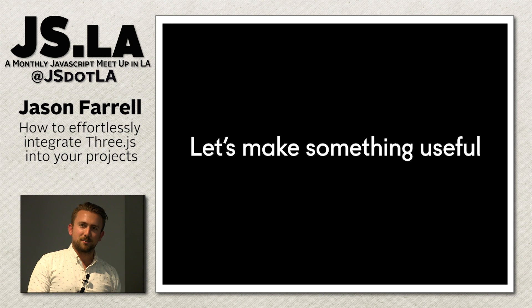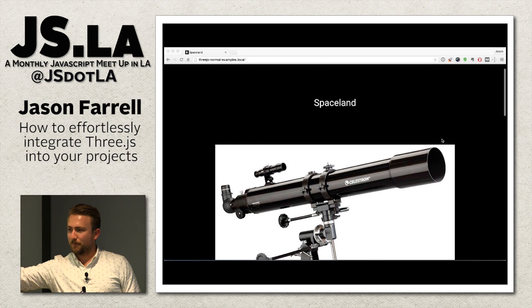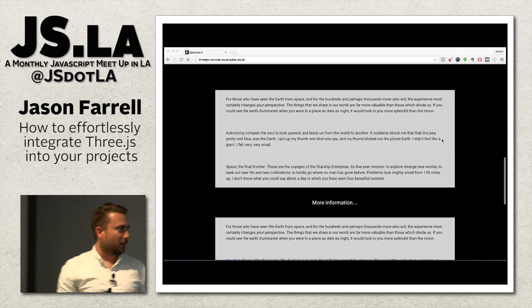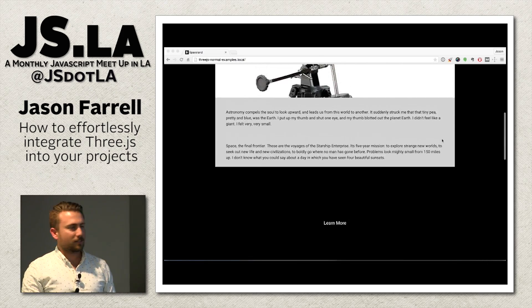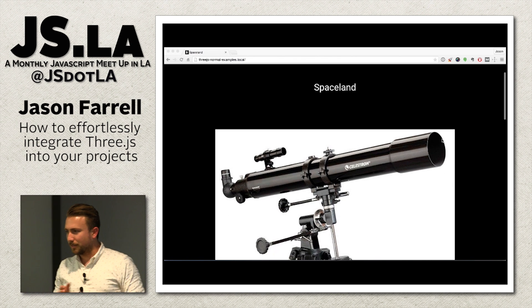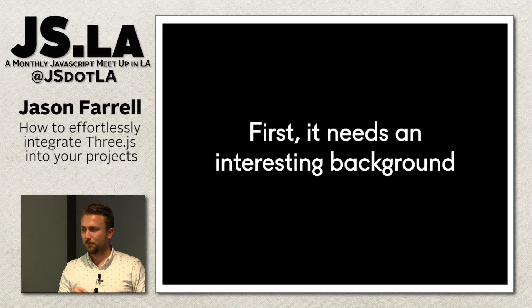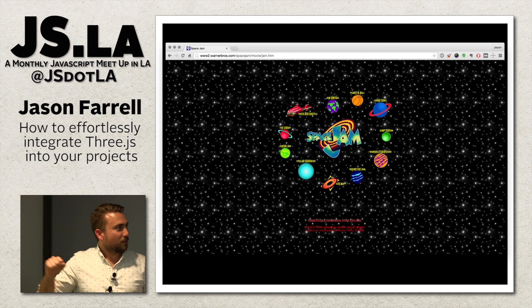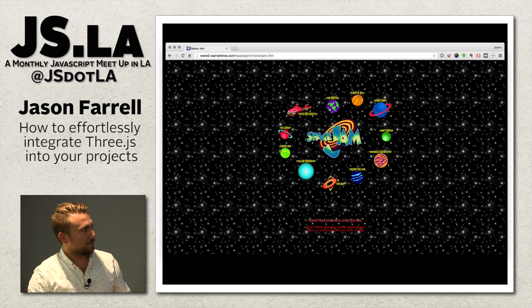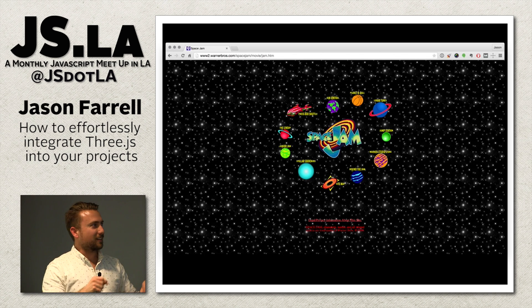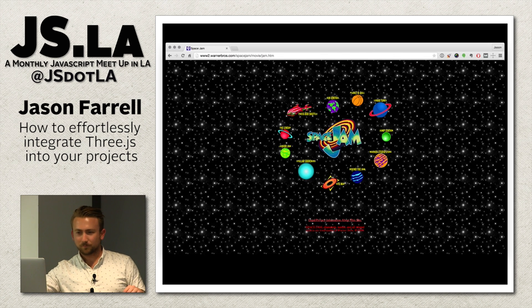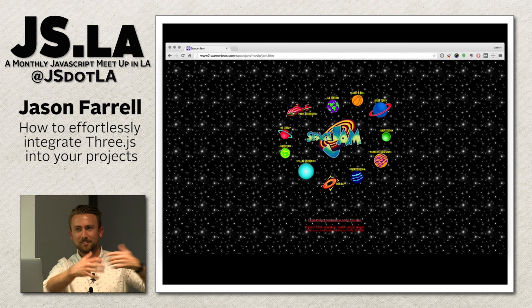Let's try to apply this to something we could actually use in our web apps or websites. I've created a fake little microsite called Spaceland. It's got some content, some links, some titles, text, and it scrolls. Wouldn't it be exciting to have some sort of interesting background? Everyone remembers Space Jam — this is my inspiration. Let's go back to the early days of the web and create a starry 3D star background.